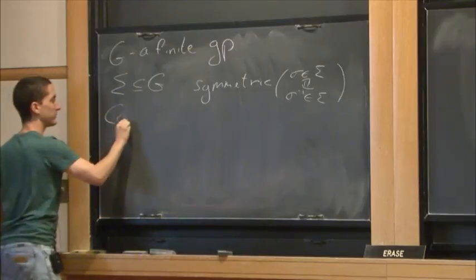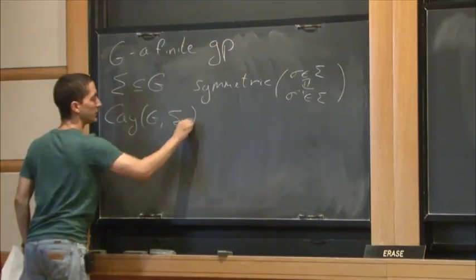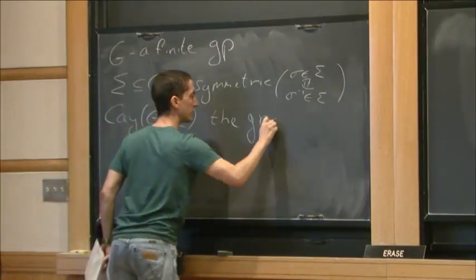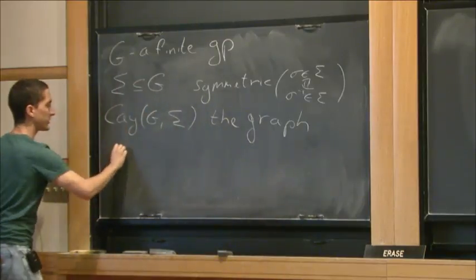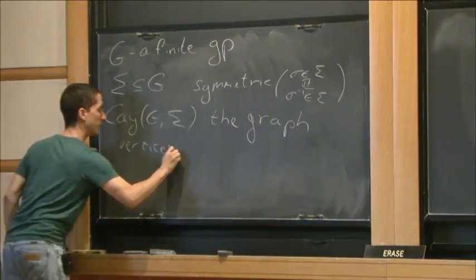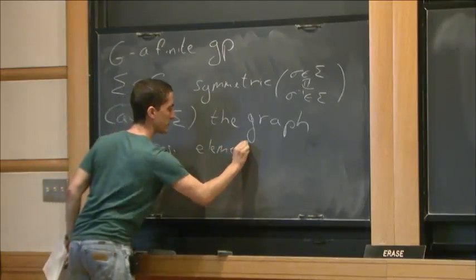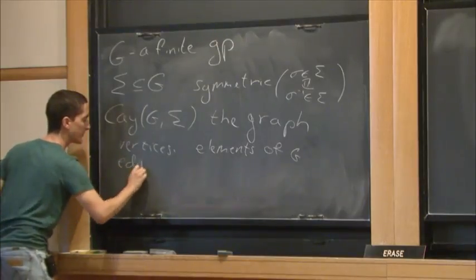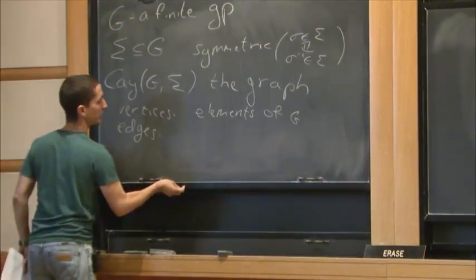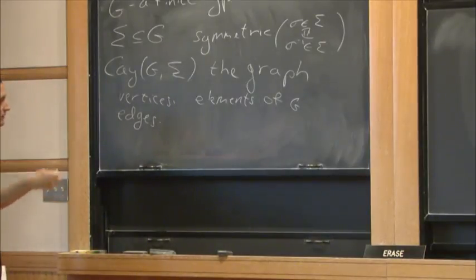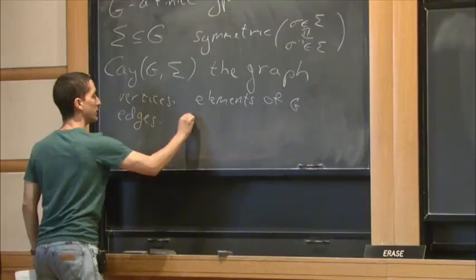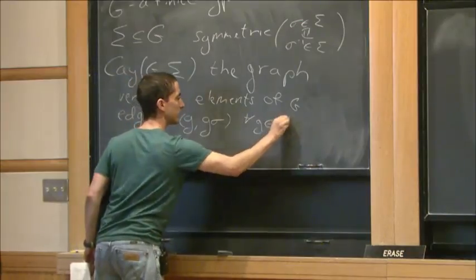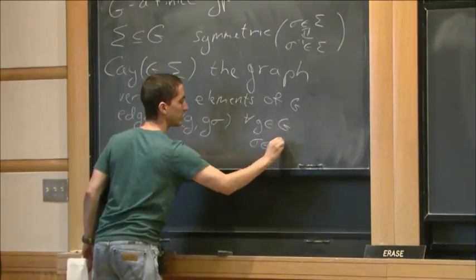And the Cayley graph of G with respect to sigma, this is the graph so that the vertices are just the elements of G. And the edges show what happens to every element if you multiply from the right by an element of sigma. So the edges connect g to g sigma for every g in G and sigma in sigma.